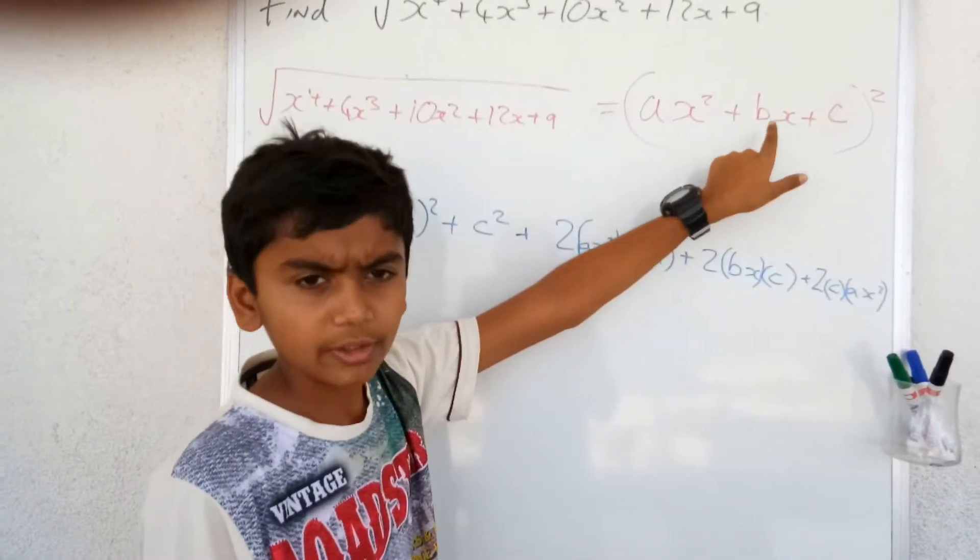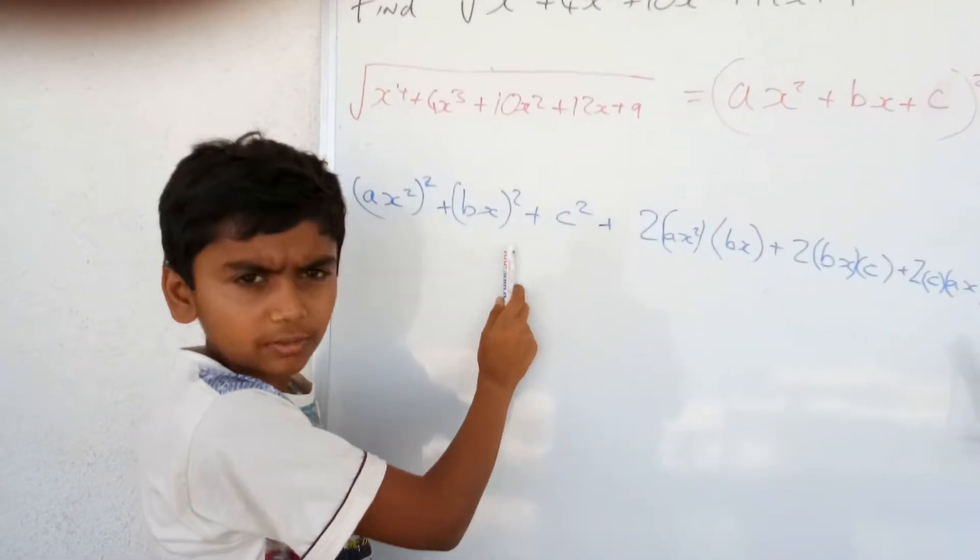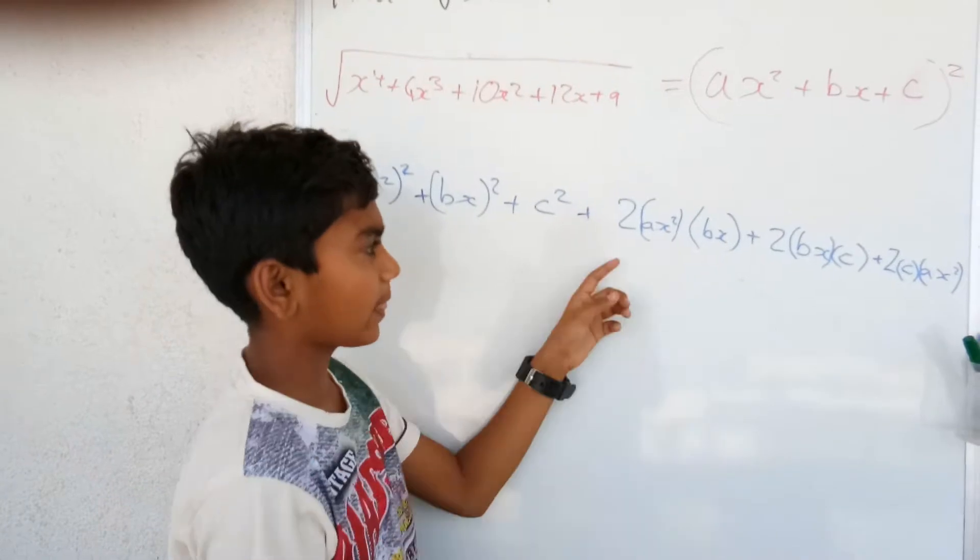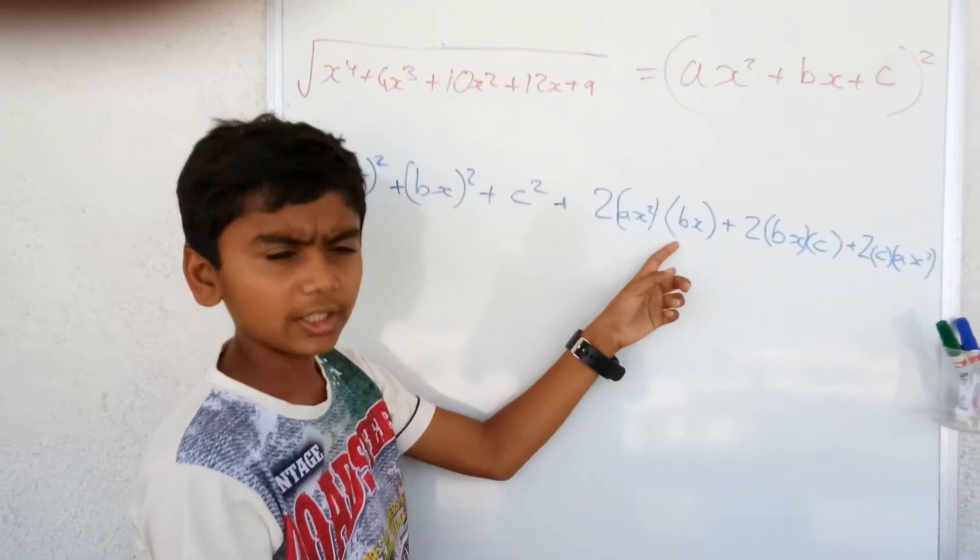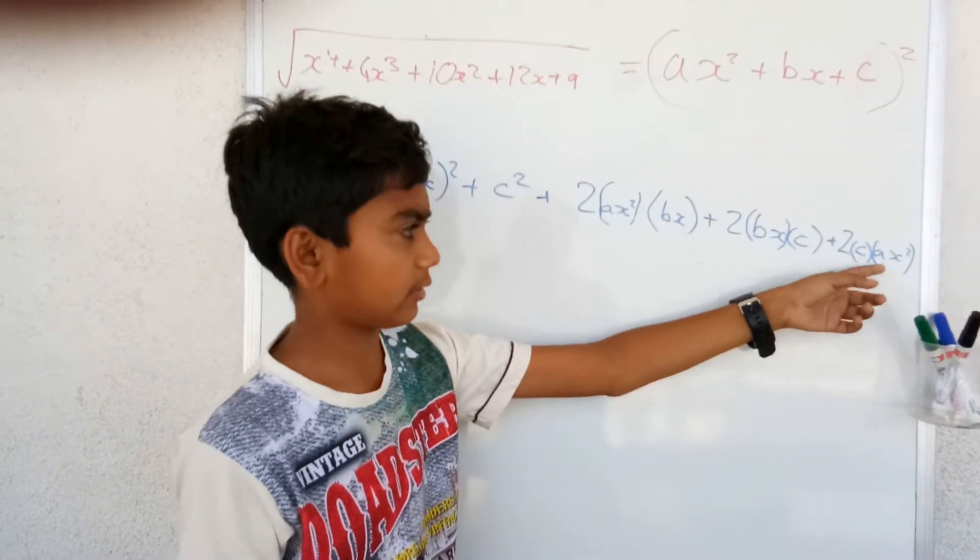The full expansion of this by using the identity is ax square whole square plus bx whole square plus c square plus 2 times ax square times bx plus 2 times bx times c plus 2 times c times ax square.